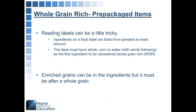When it comes to pre-packaged items, reading labels can be tricky. The front of packaging can have misleading wording, so you always want to look at the ingredients list. Ingredients on a food label are always listed from greatest to least amount. The label must have whole corn or a whole grain listed as the first ingredient to be considered whole grain rich. Enriched grains can be in the ingredients but must be listed after a whole grain.